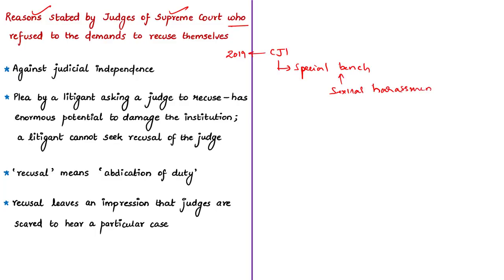Another case involves Justice Arun Mishra — a petition was filed to challenge a judgment given by Justice Arun Mishra, but he did not recuse himself from hearing a question of law that challenged his own earlier judgment. His reason for non-recusal was that recusing himself was against the concept of judicial independence. In 2019, a public interest litigation was filed in the Supreme Court about the plight of inmates of the Assam detention center, and the then Chief Justice Justice Ranjan Gogoi was asked to recuse himself.